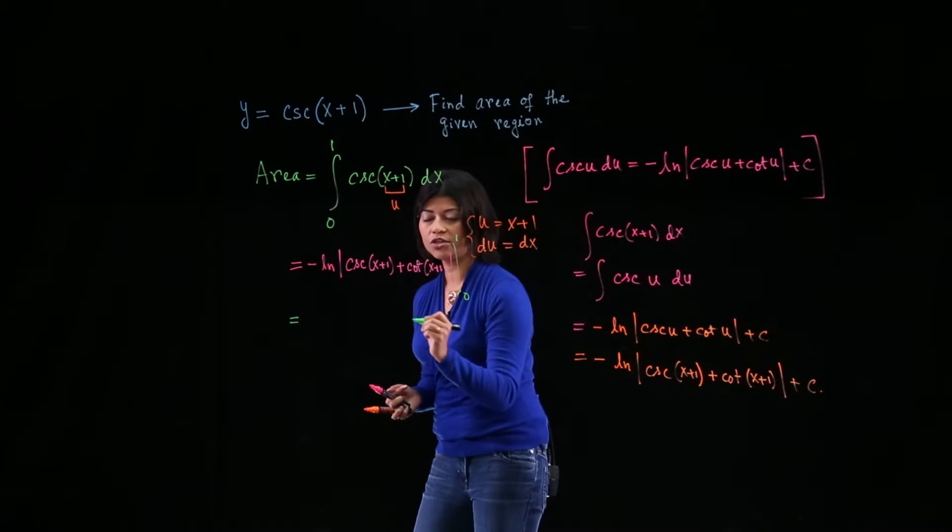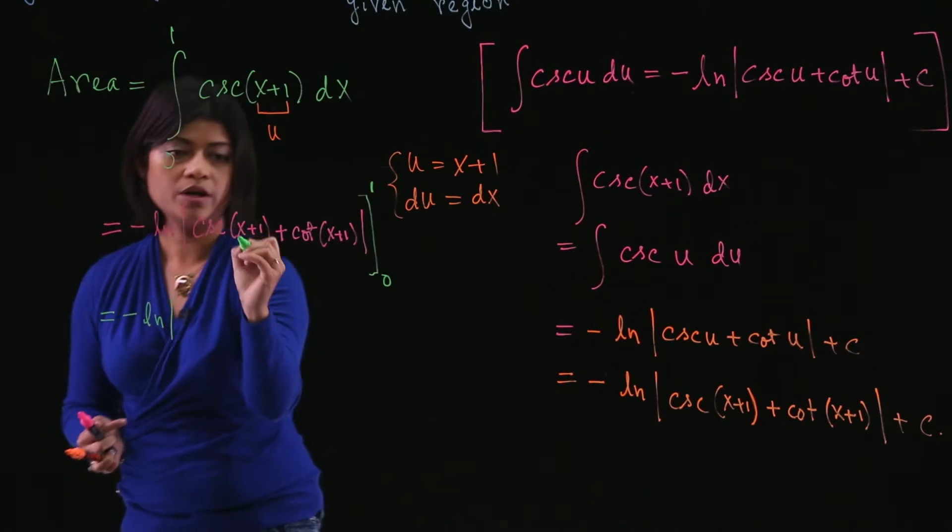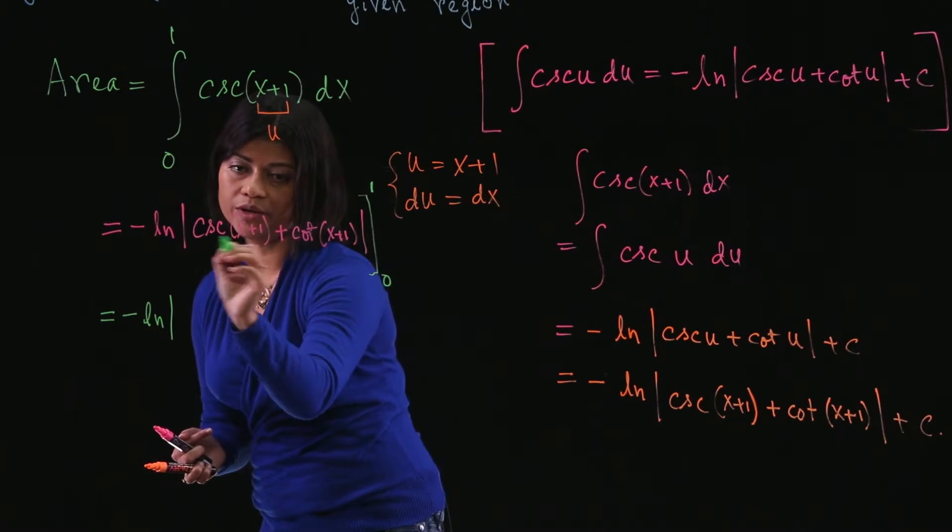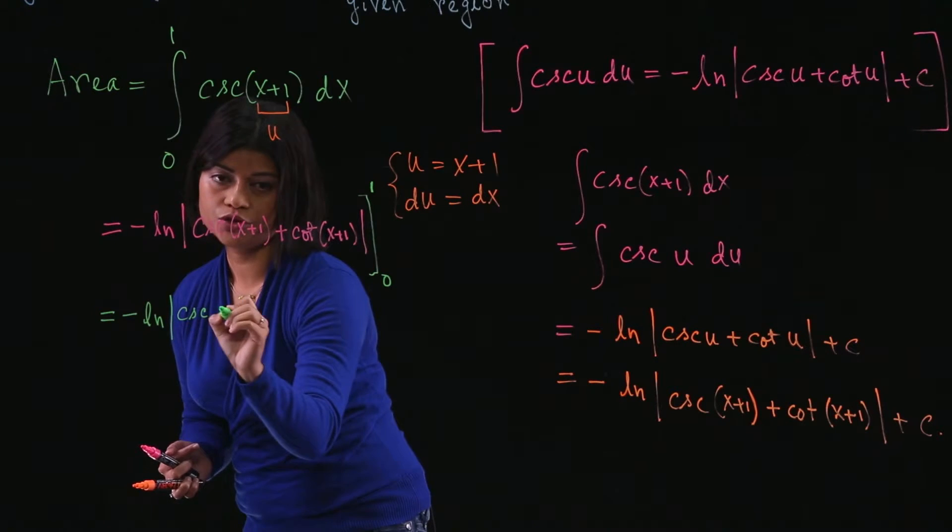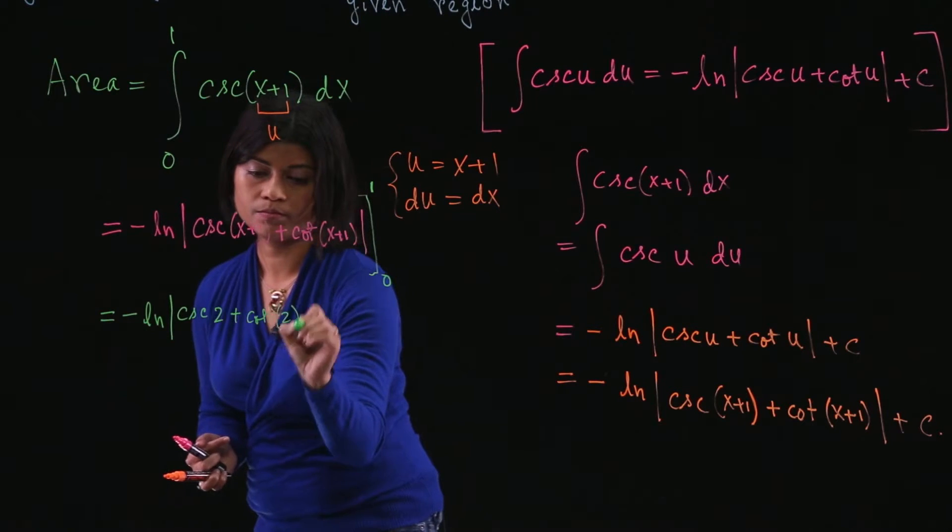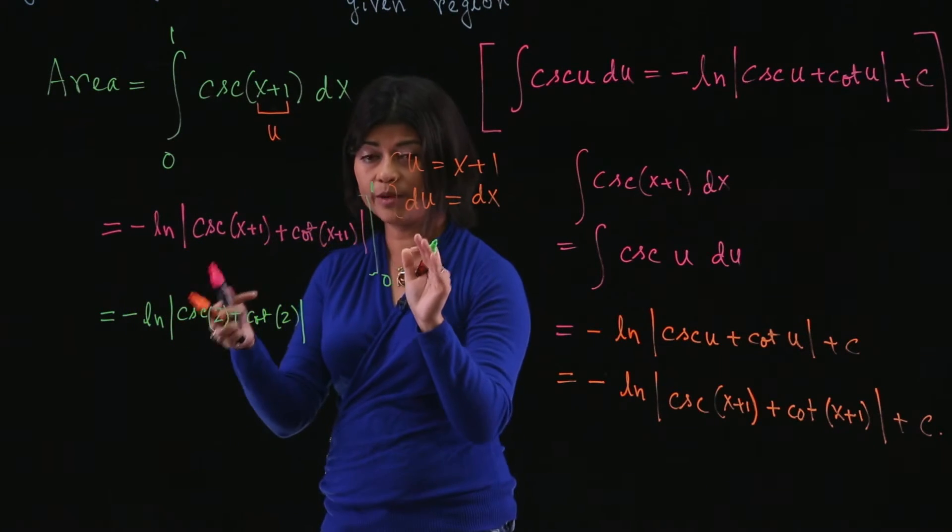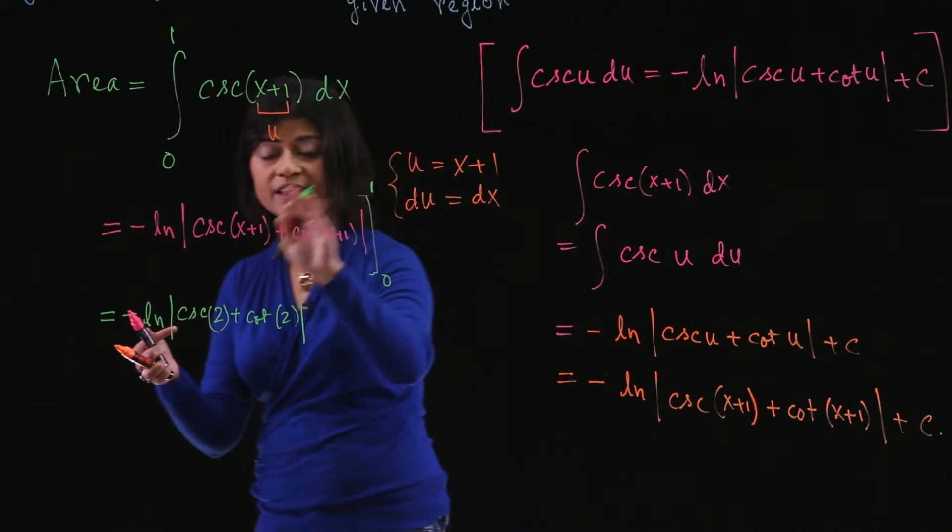So let's plug in 1 first. When you do that, 1 for x, you get cosecant of 2 plus cotangent of 2. Remember, this is fundamental theorem of calculus. You're plugging in 1.